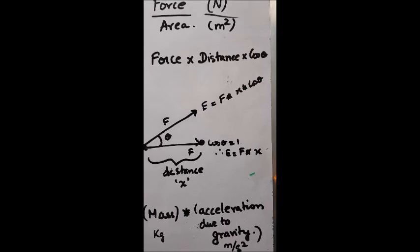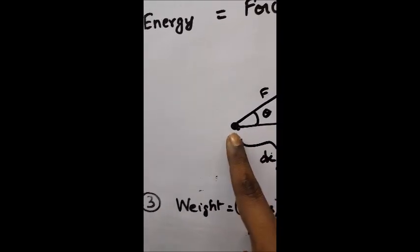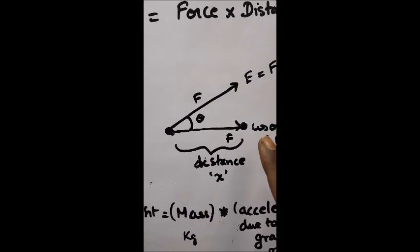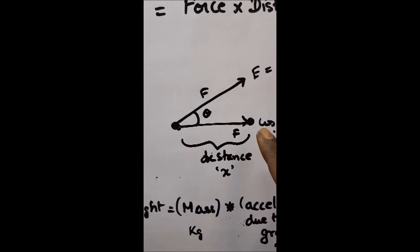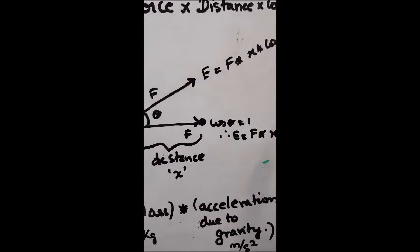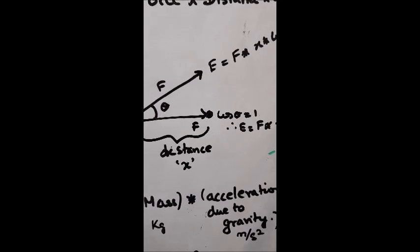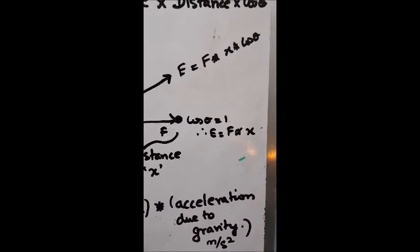So you can see this is the object that we are trying to move, and this object moves by a distance along the direction of the force application. Then the energy is force times distance, and the cosine of zero is one, so we don't have any reduction or increase in the energy.